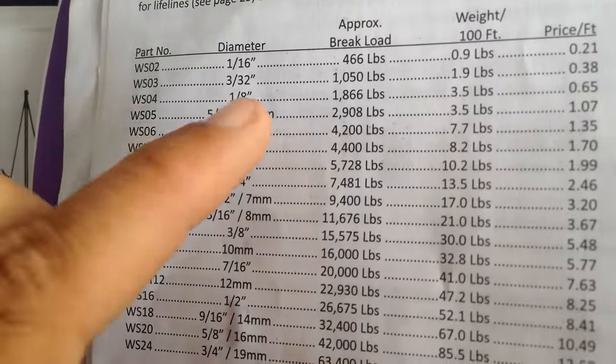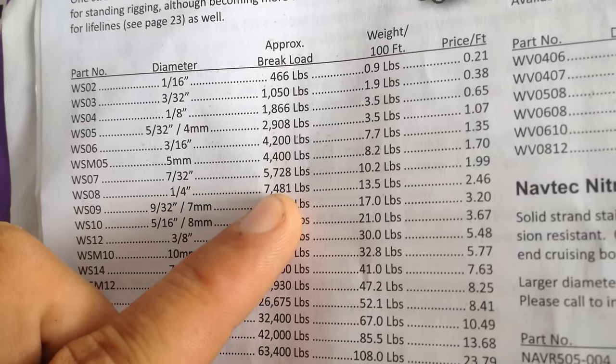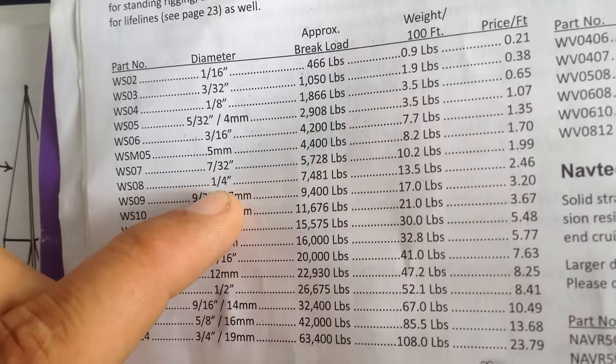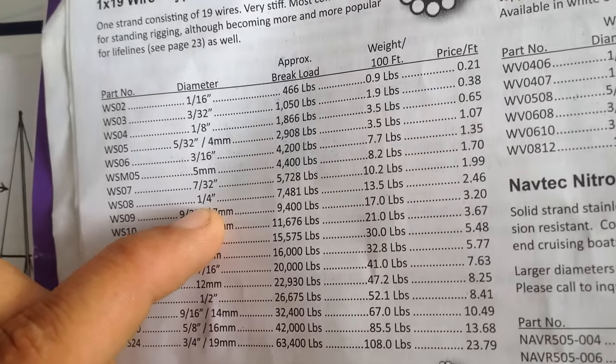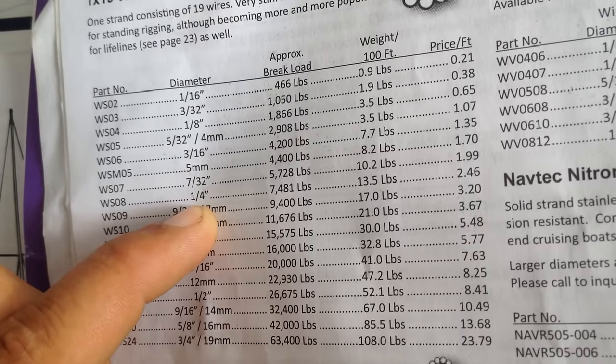It's just the next step. You're getting roughly 1,500 pounds of force more out of each wire. So anyway, we decided to just go up one more, and that's what we're going to do with all of these shrouds and stays for the main mast, and then we did our own calculations for the mizzen.